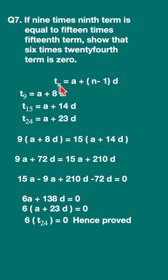tn, that is the nth term of an arithmetic progression, is equal to a plus (n-1)d, where a is the first term and d is the common difference.